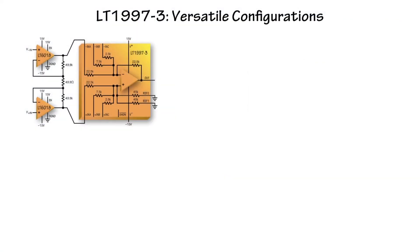Some examples of the versatility of the LT1997-3 are shown here. You can use it as the difference amp portion of an instrumentation amplifier. Here, we use the LT6018 precision op amp configured in gain, and the LT1997 as a gain of 1 difference amplifier, to get the very high common mode rejection.